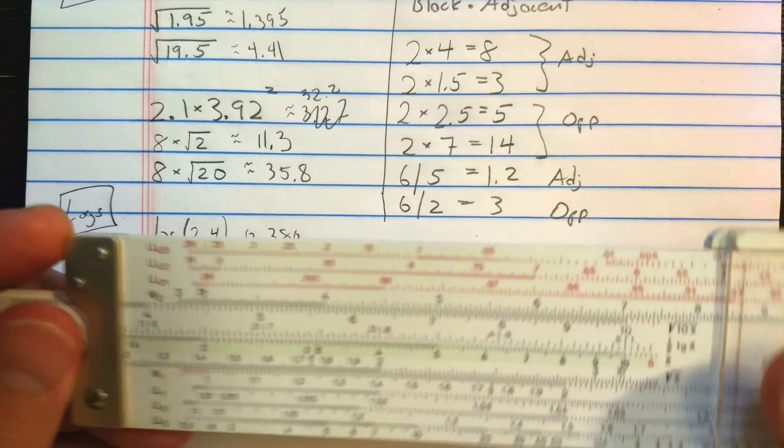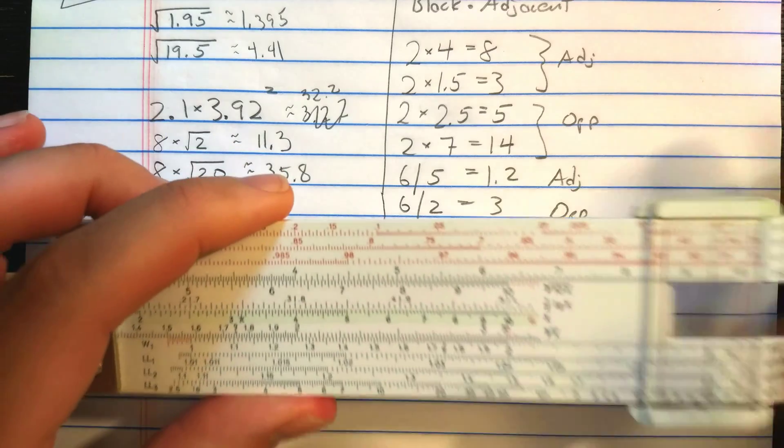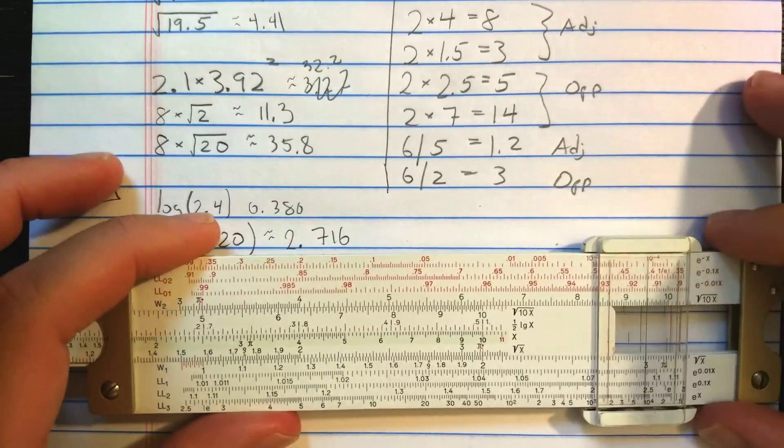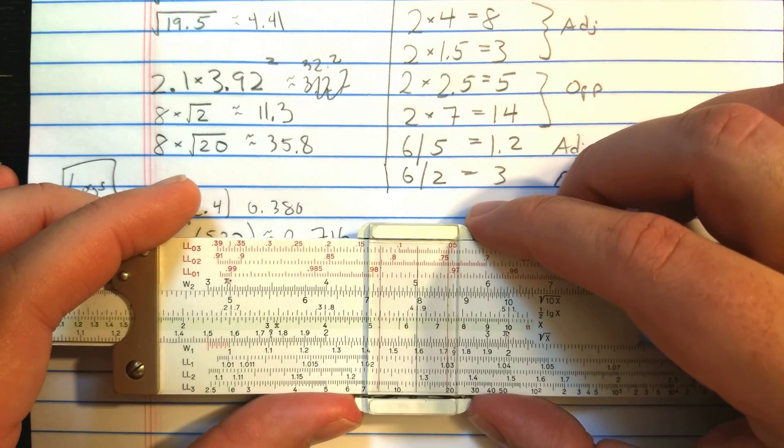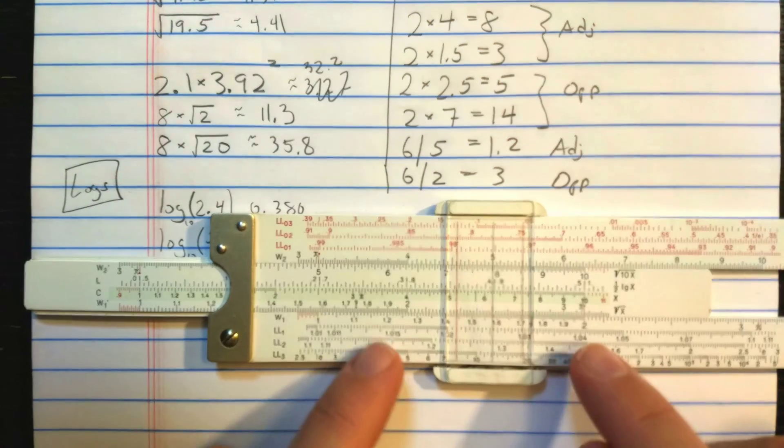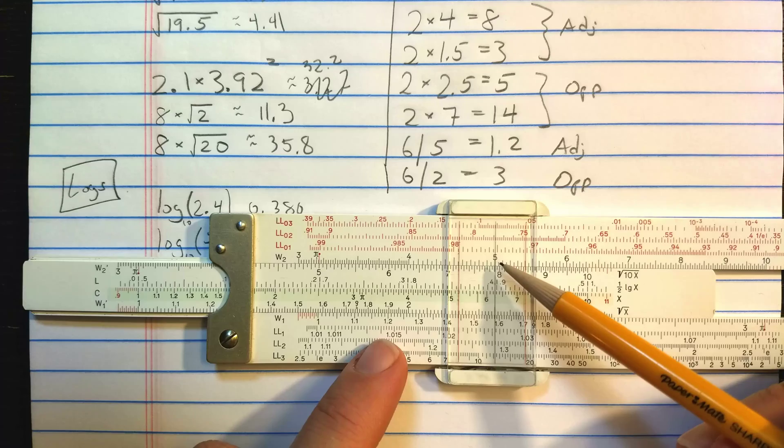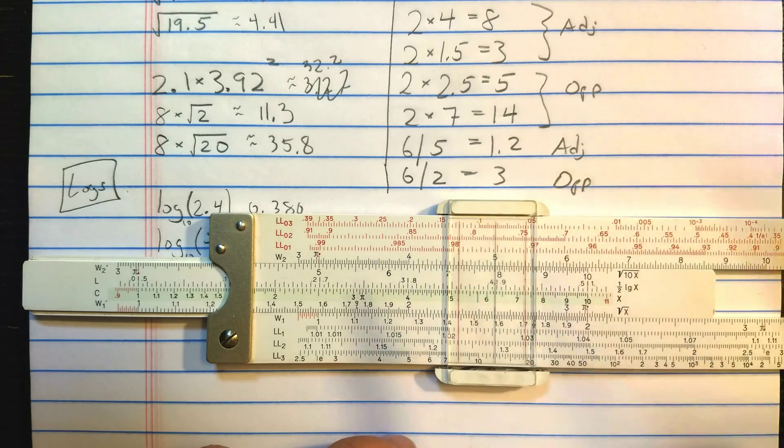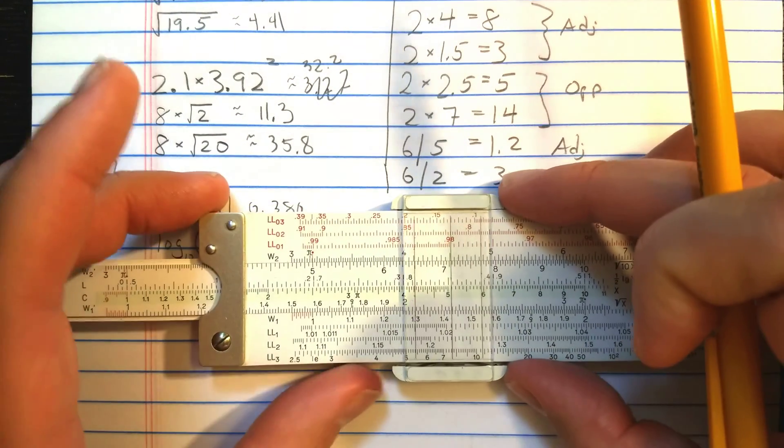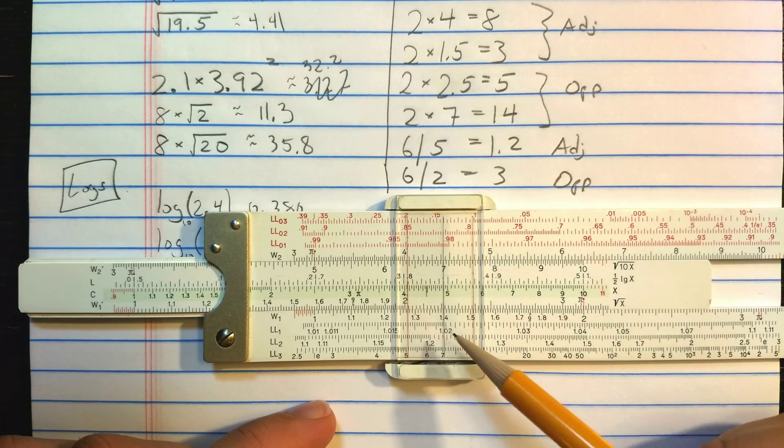If I want to do 2 times 2.5, I see that I need to swap indices here and use the red index. So here I have a line 2 with the red index. So 2 times 2.5, 2.5 is here on W1 prime. Since I've used the red index, the result is here, opposite 5, on W2 instead of W1. Okay. If I want to do 2 times 7, I find the 7. But I read correct result down here, 14. Again, that's because I've used the red index.